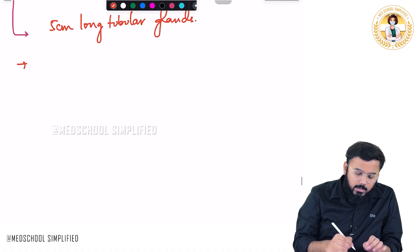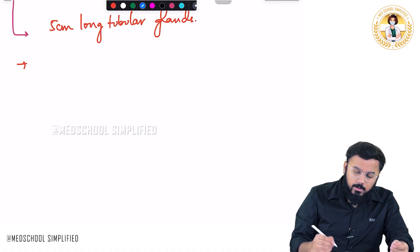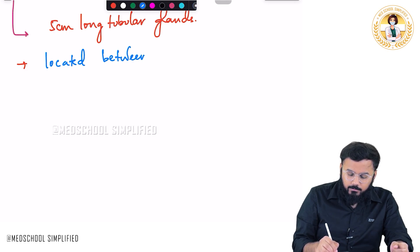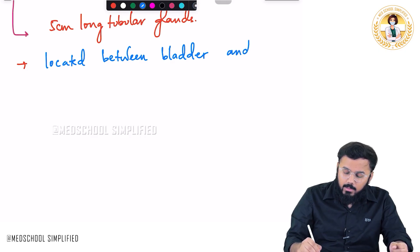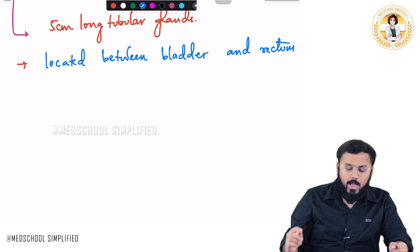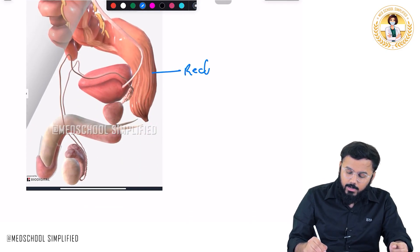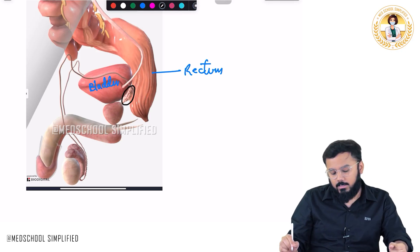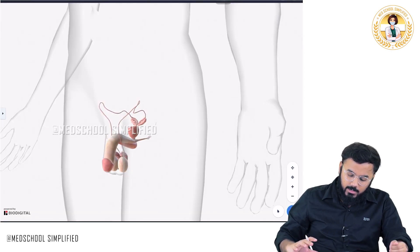Where are the seminal vesicles located? These seminal vesicles are located between your bladder — your urinary bladder — and your rectum on the back. You can see that this part is called your rectum, this part is called your bladder, and the seminal vesicles are located between them.